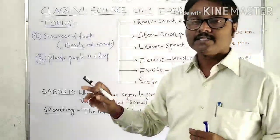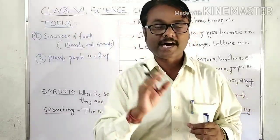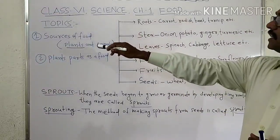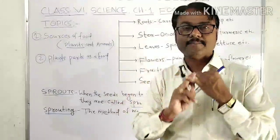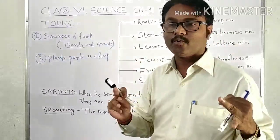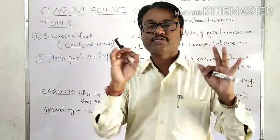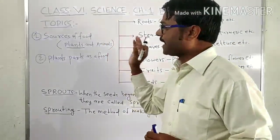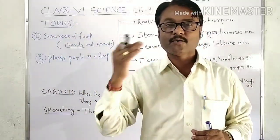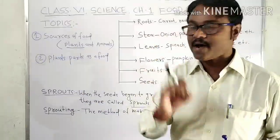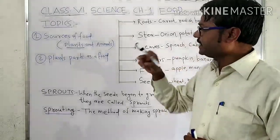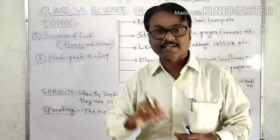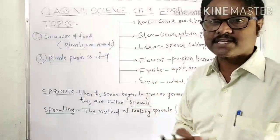We will discuss the plants and the parts of the plant which are taken as food. As mentioned, sources of food come from either plant or animal. Maximum food comes from these two categories — plant and animal — and plants cover more than 50 percent of our food. In the next video we will discuss animal products, but today we will focus on plant products.